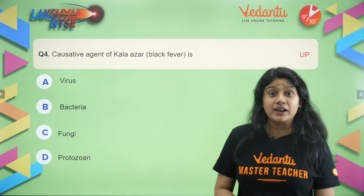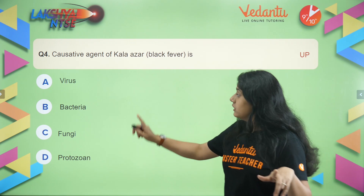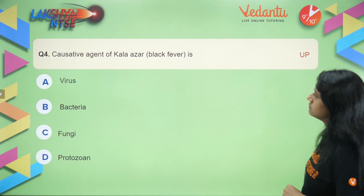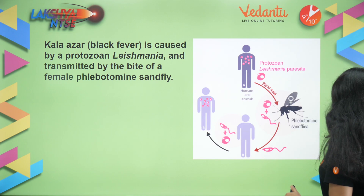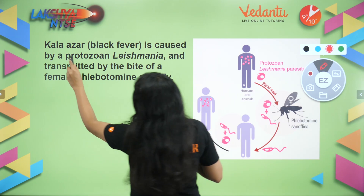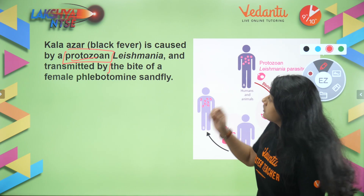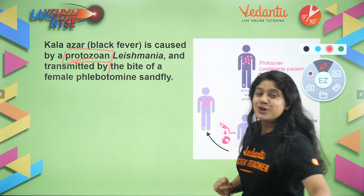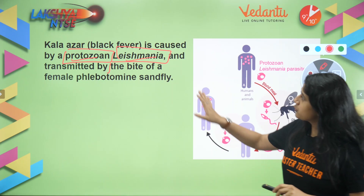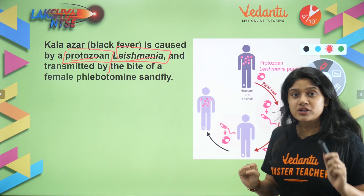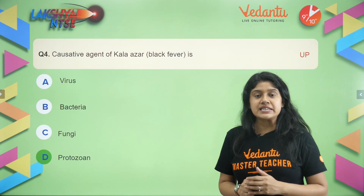Question number four — from the 'Why do we fall ill' chapter: is the causative agent a virus, bacteria, fungi, or protozoa? This fever is caused when a mosquito bites and carries a protozoa — specifically Leishmania. So the right answer is option D: protozoan.